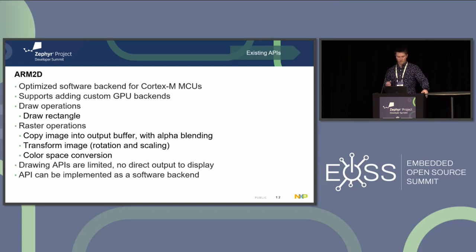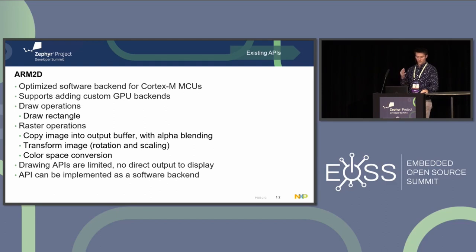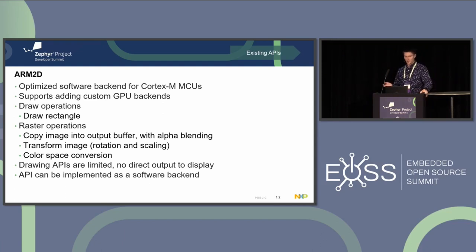ARM2D is another option to highlight. It's in early stages but is generally intended as an optimized software backend for Cortex-M MCUs, with support for custom GPU backends as well. It has simple draw operations, simple raster operations, and color space conversion. The drawing APIs are limited and there's no direct output to display. The big thing here is it's an example of doing software backends — what can be done as an optimized renderer on a Cortex-M MCU.